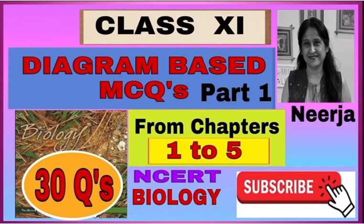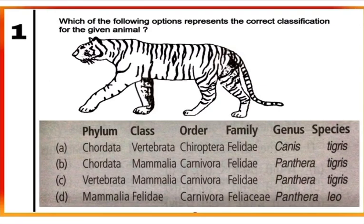Hello students. This is a diagram special video where we will discuss diagram-based MCQs from Chapter 1 to 5 of your NCERT book. Question 1: Which of the following options represent the correct classification of the given animal? The given animal is tiger, whose scientific name is Panthera tigris. Panthera is the genus while tigris is the species. It belongs to family Felidae, order Carnivora, class Mammalia, and phylum Chordata. Correct option is B.